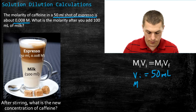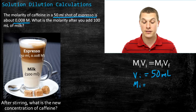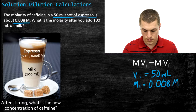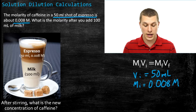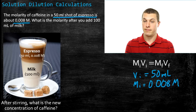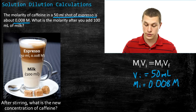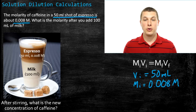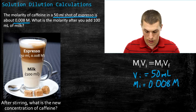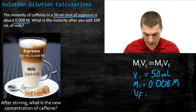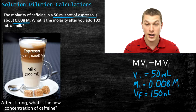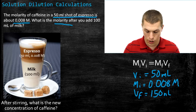Now, for the final volume, here's where you might make a mistake. You might say the 100 milliliters of milk is the final volume — but remember, when we stir everything together, we have both the espresso and the milk. So we add those two volumes together: 50 + 100 = 150 milliliters. The final volume is the total combined volume. So V_f is 150 milliliters, not 100. What we want to find is the final molarity — that's our unknown.